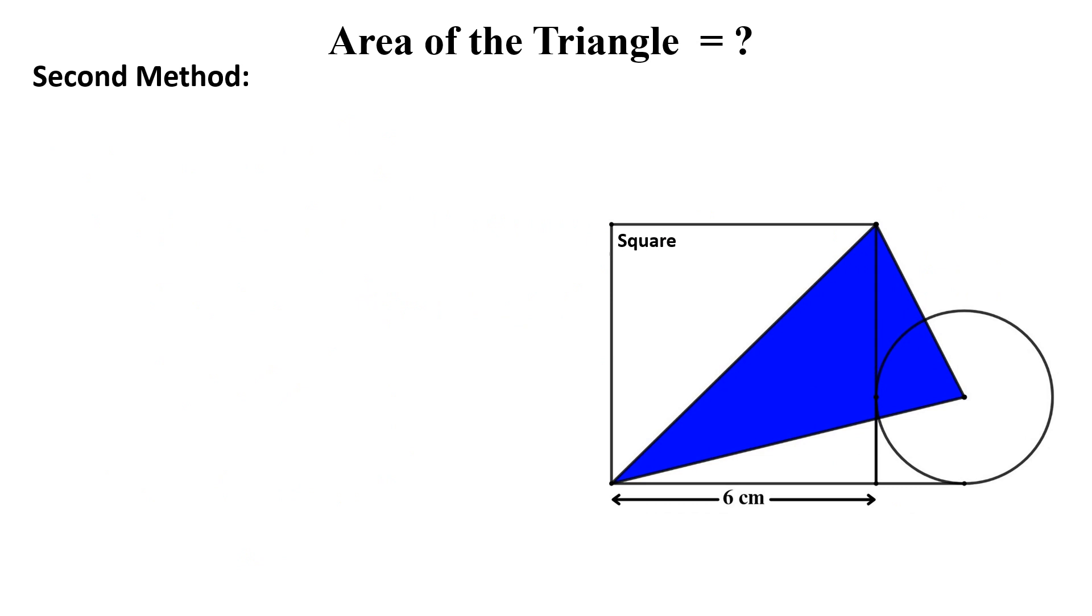Now we will solve this question by the second method. In the second method, first we draw this square, the sides of this square are equal to the radius of this circle.